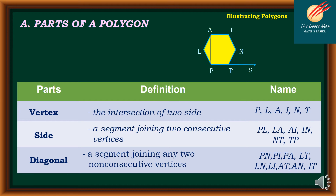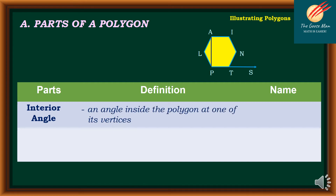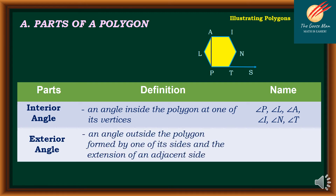Interior angles are angles inside the polygon at one of its vertices. Examples are angle P, angle L, angle A, angle I, angle N, and angle T. Exterior angles are angles outside the polygon formed by one of its sides and the extension of an adjacent side. In our example, we have angle MTS.